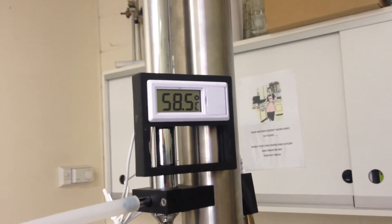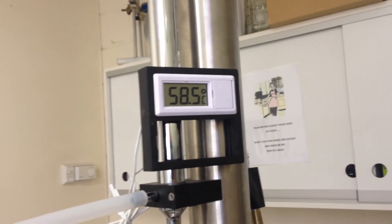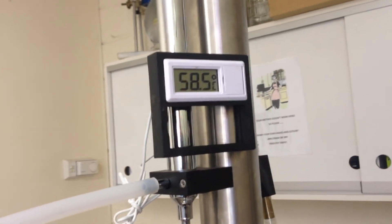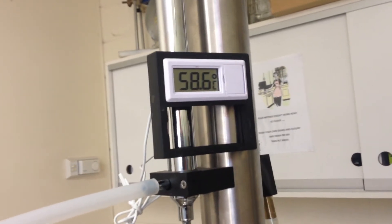We're running the Turbo 500 still in the Australian Home Brewing Warehouse and you can see it's 58.5 degrees. That's the water outlet temperature, exactly where it needs to be.